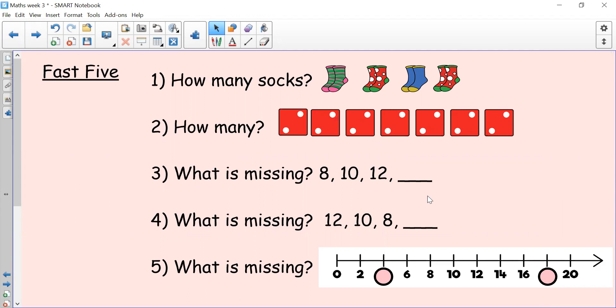So let's start with our first five questions. Number one, how many socks? Remember we're not counting in ones, what did we learn to count in on Thursday and Friday? Number two, how many dots on the dice? Number three, what is missing? Look at the sequence of numbers, what is missing from here? And number four, what is missing? Look at this sequence, what comes next? And then number five, it's another what is missing question, but this time we have a number line. So have a look where the two circles are, what numbers are missing from there?